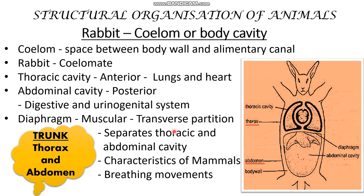The diaphragm separates the thoracic and abdominal cavity. It is found only in mammals — it is a characteristic of mammals. When we study the trunk in morphology, it is divided into thorax and abdomen, which corresponds to the thoracic cavity and abdominal cavity internally. The diaphragm helps in breathing movement — during inhalation and exhalation, it moves and assists in breathing.